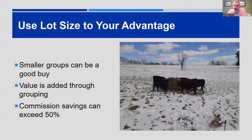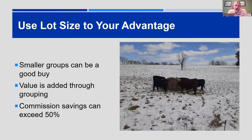When Greg went through his budget, he talked about sale expenses — commission, checkoff, and insurance. If you're moving through the auction system, the commission savings once you get to larger lot sizes can exceed 50%. The difference between a large group and a very small number of cattle moving through the yards can be $16 to $20 per head on the low end, up to $50 or more for the smallest lot sizes. So lot size matters in two ways: the price per hundredweight you receive, and the commission rate you pay.